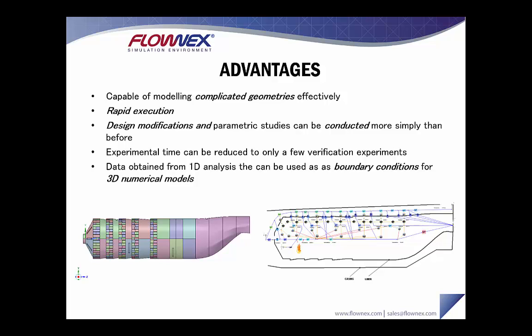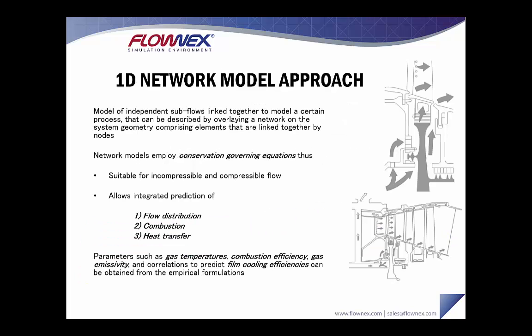Some of the advantages of a one-dimensional network model are that it's capable of modeling complicated geometries effectively, its execution is rapid — typically only a couple of seconds for large models — design modifications and parametric studies can be conducted more simply, and experimental time can be reduced to only a few verification experiments. Also very importantly, data obtained from this type of analysis can be used as boundary conditions for 3D numerical models.